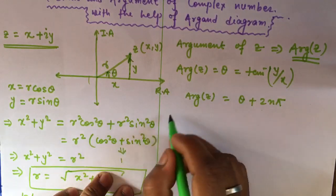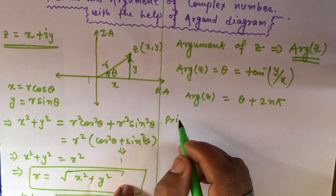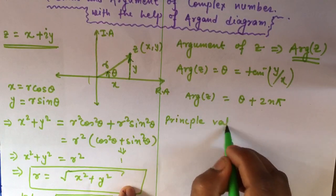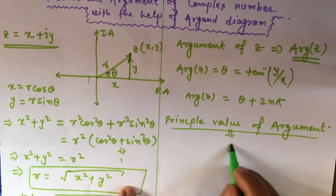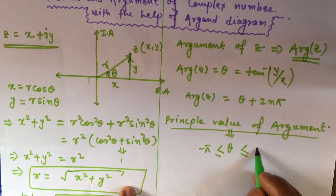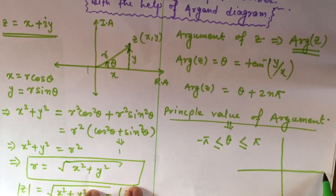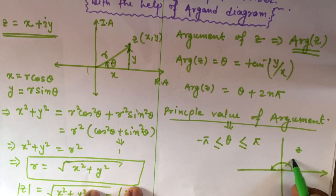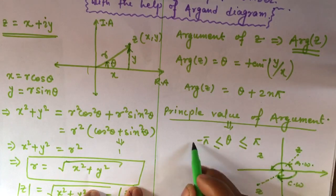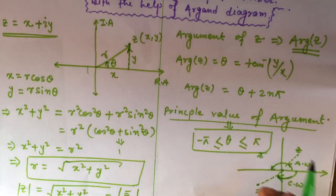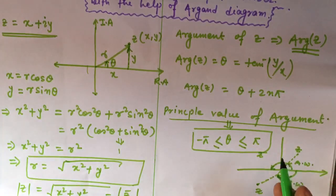There is something called the principal value of the argument, which lies in the range −π ≤ θ ≤ π. If z is in a position where we measure anti-clockwise, we take that value. But if z is positioned such that going anti-clockwise exceeds π, we instead go clockwise, staying within the principal value range from −π to π.